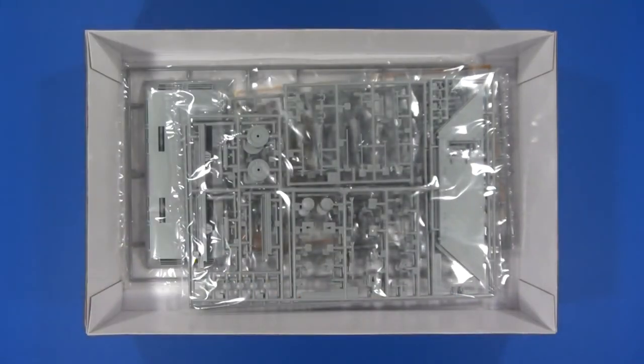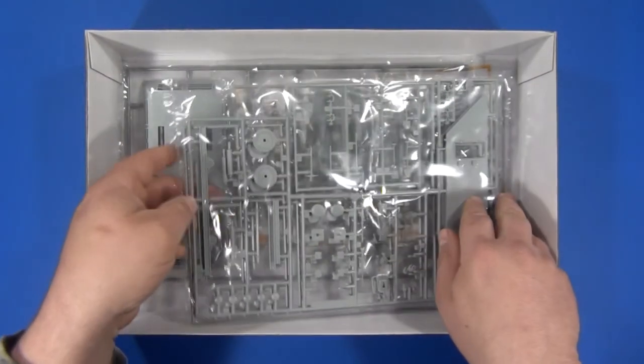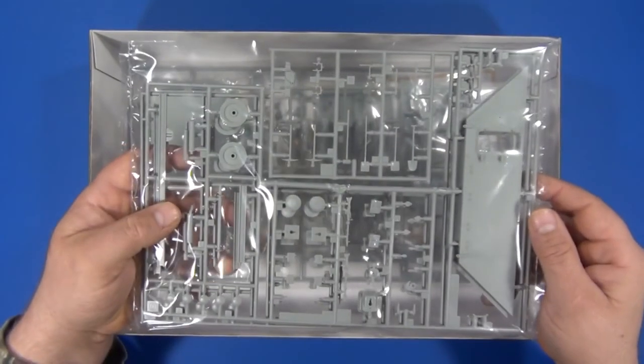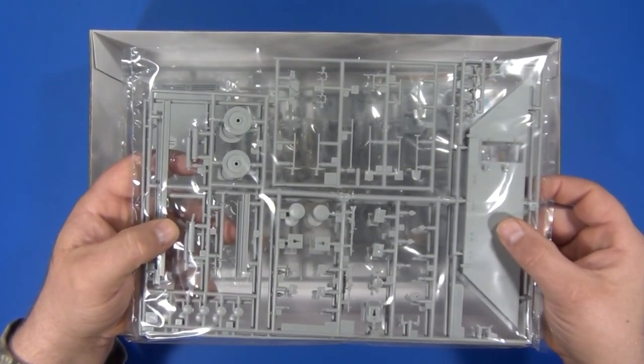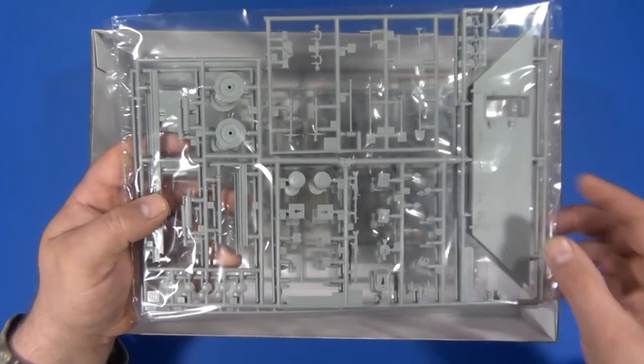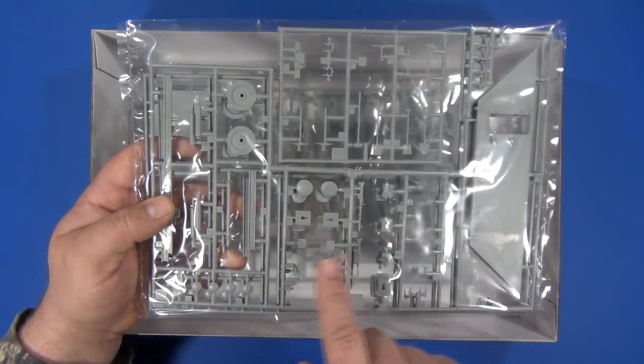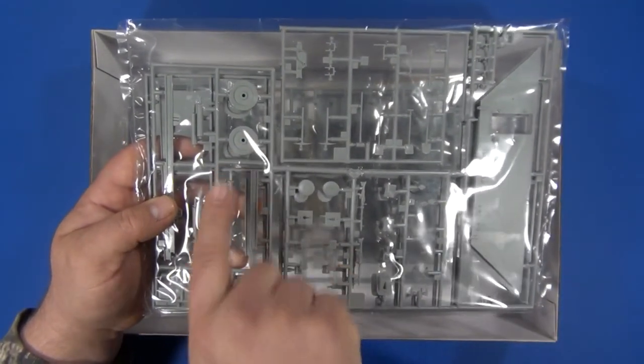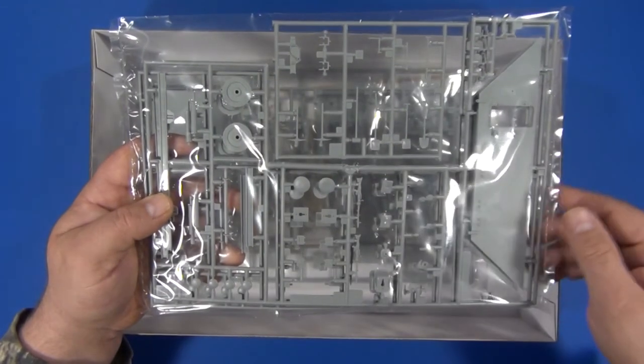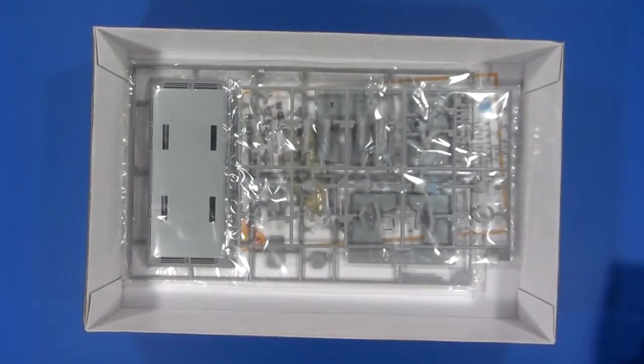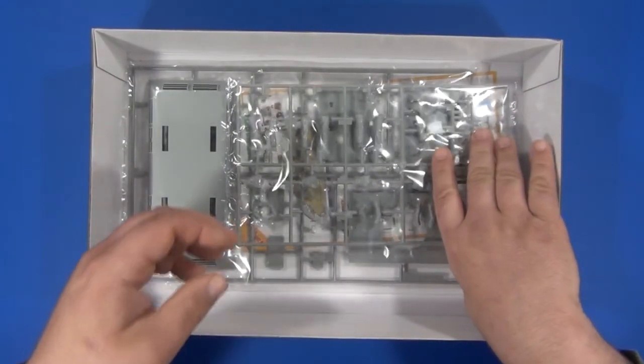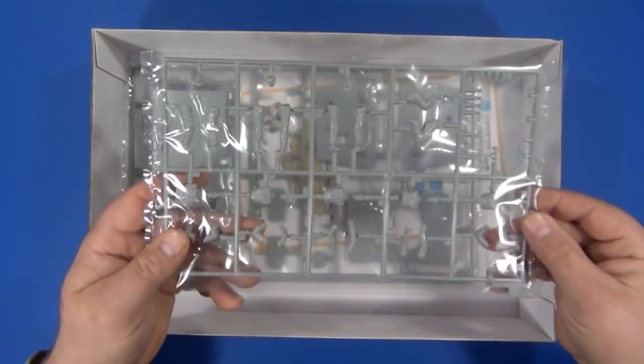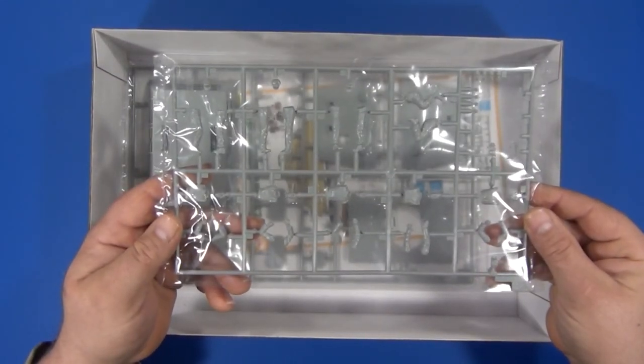Here we have the superstructure side panels, MG 34s, wheels, and pioneer tools. This sprue contains our five Waffen tank crew figures.